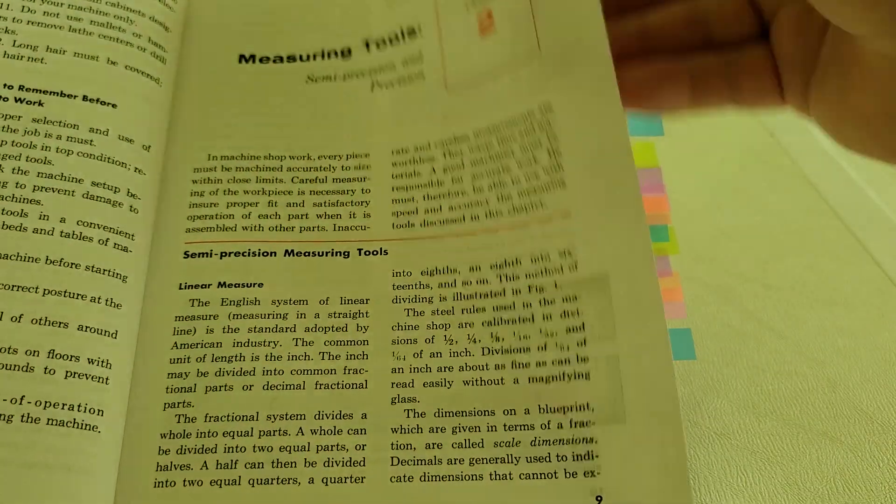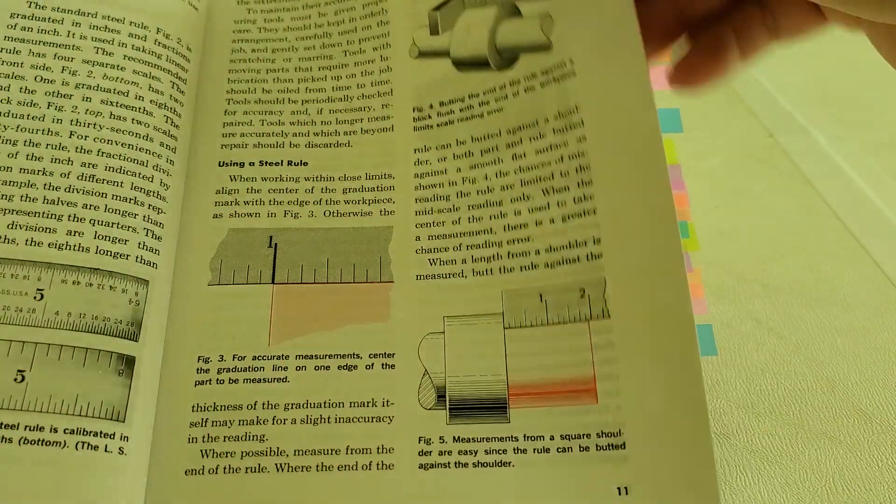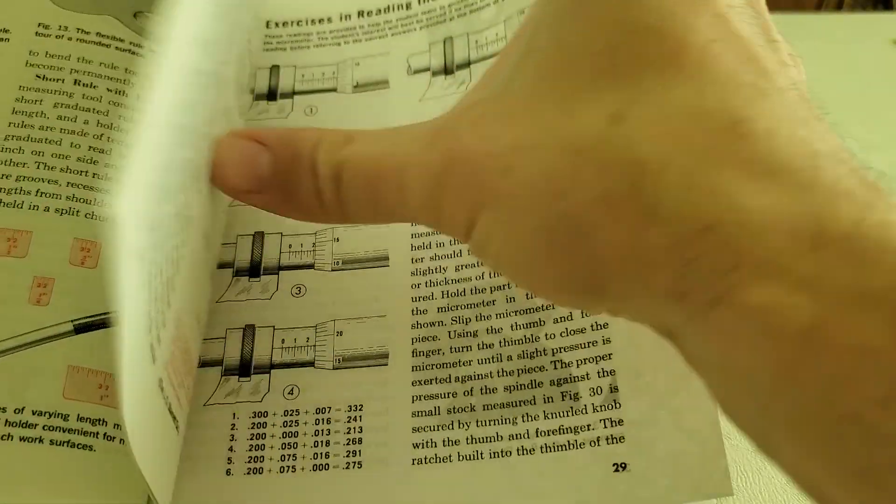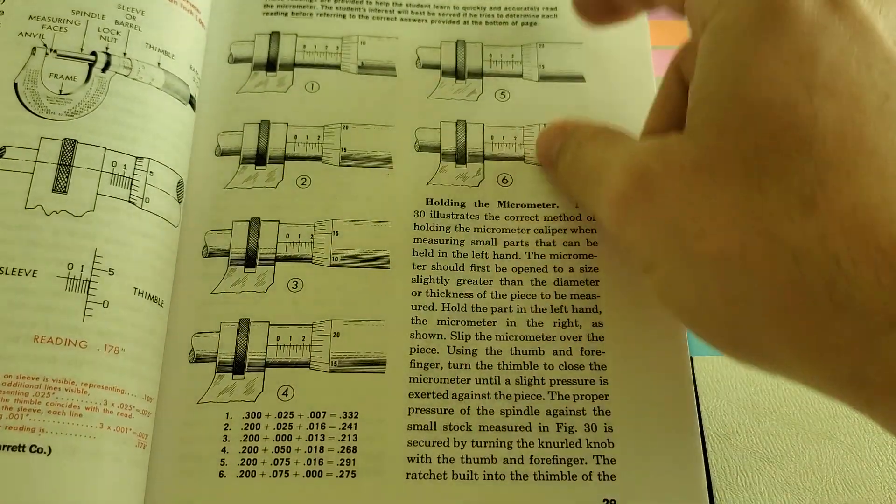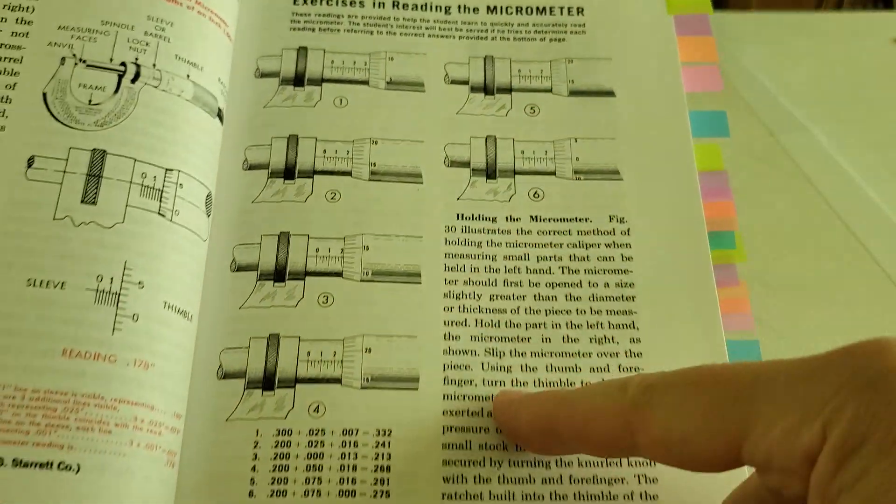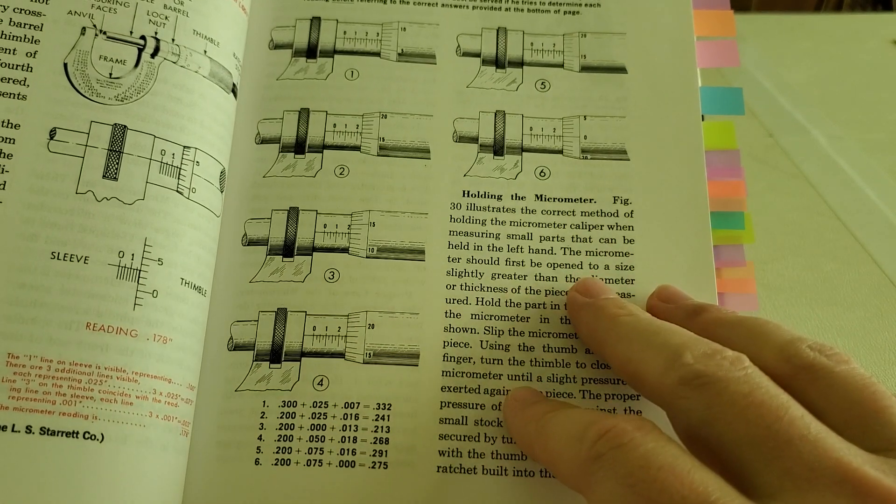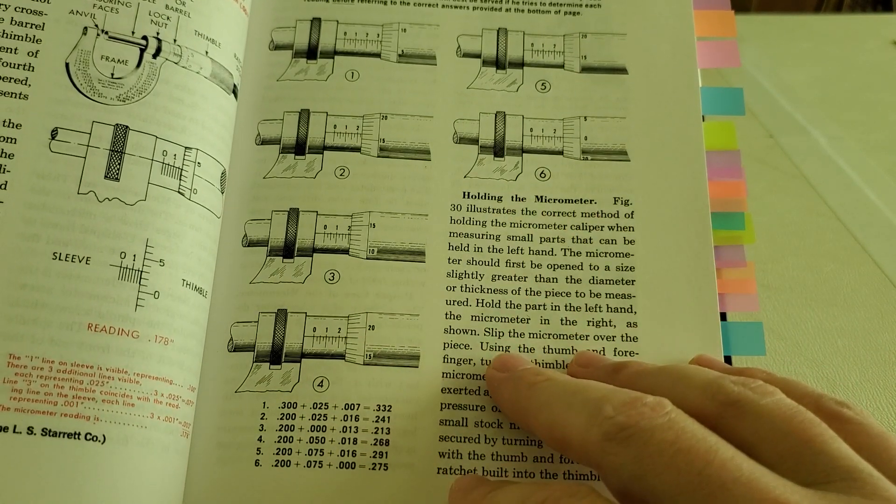The measuring section covers everything from scales to micrometers and pretty much everything in between. The measuring section also has some exercises for reading micrometers. So if you're not particularly confident in your abilities there, that's a good place to start.